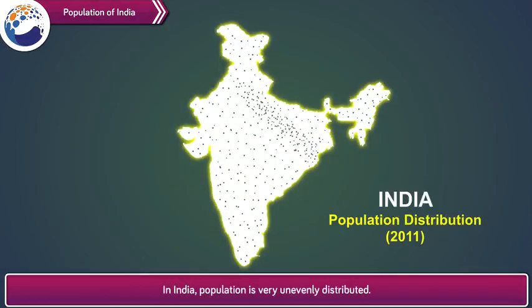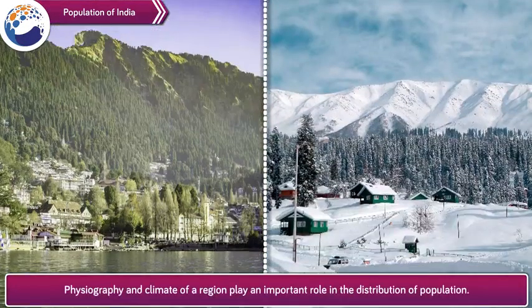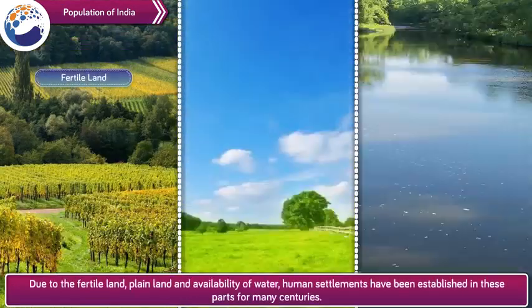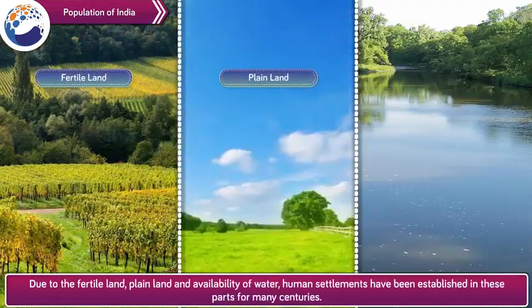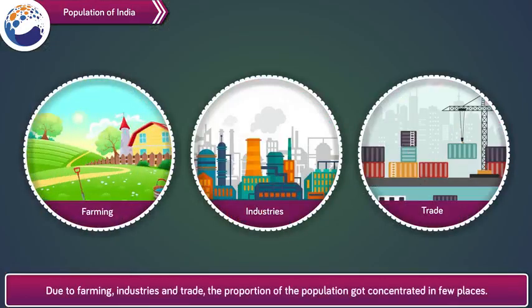In India, population is very unevenly distributed. Physiography and climate of a region play an important role in the distribution of population. Due to the fertile plain land and availability of water, human settlements have been established in these parts for many centuries. Due to farming, industries and trade, the proportion of population got concentrated in few places.